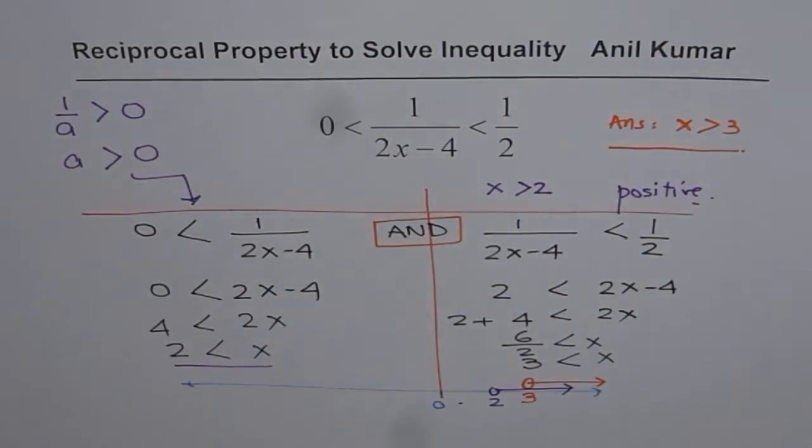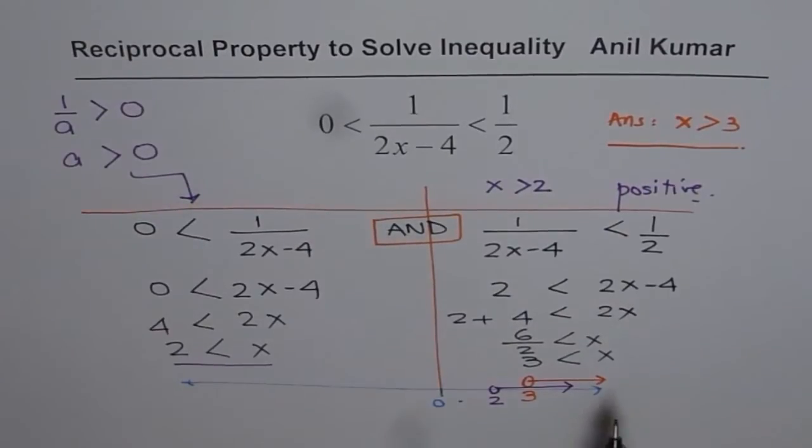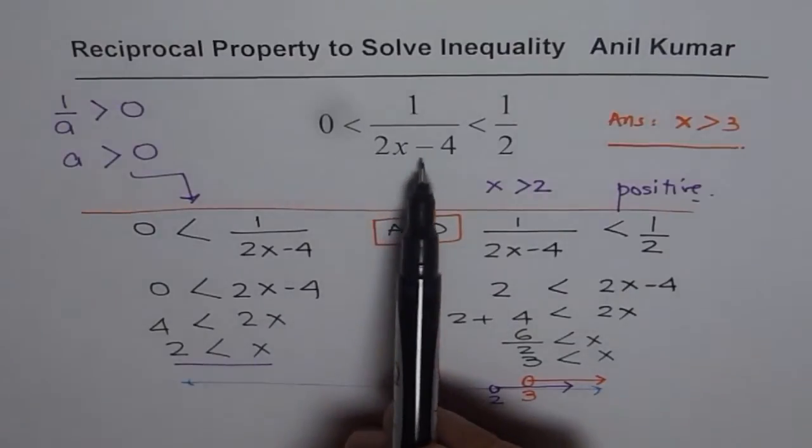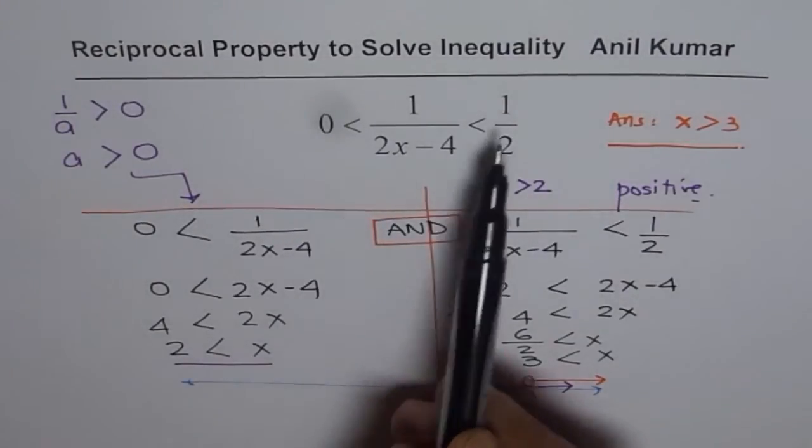That is how we can solve these inequalities. Let's review the strategy once again. The question was that 1/(2x - 4) is between 0 and 1/2.